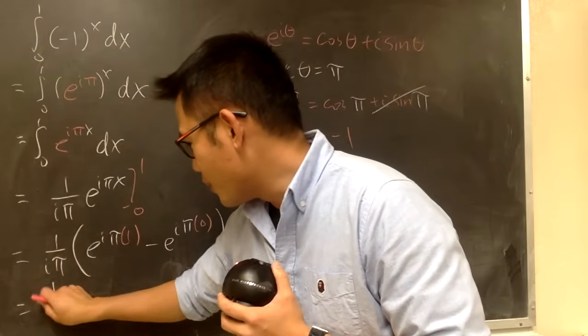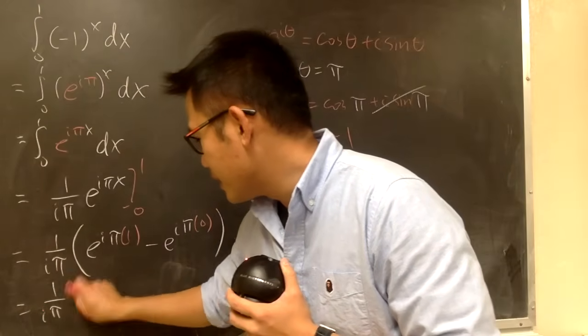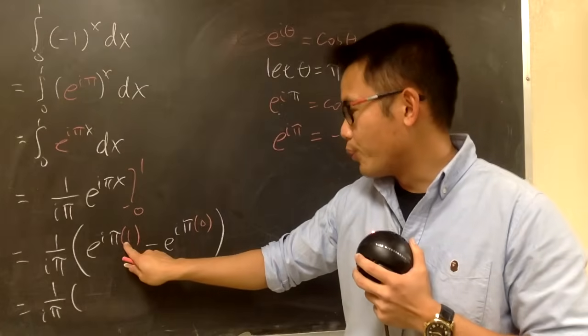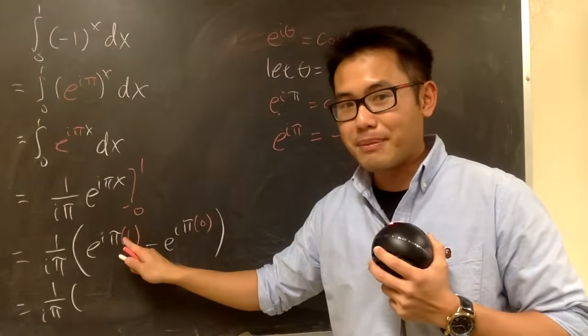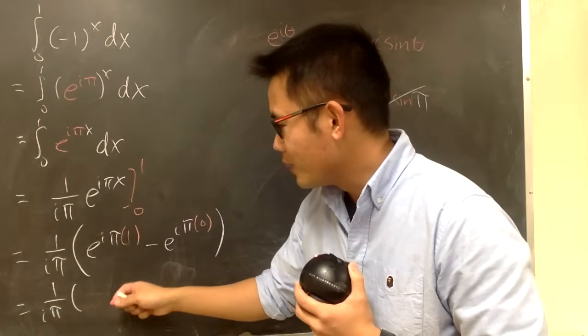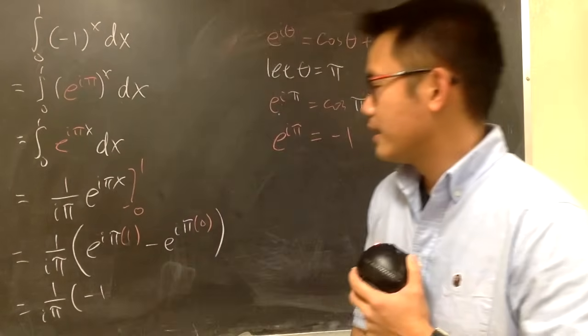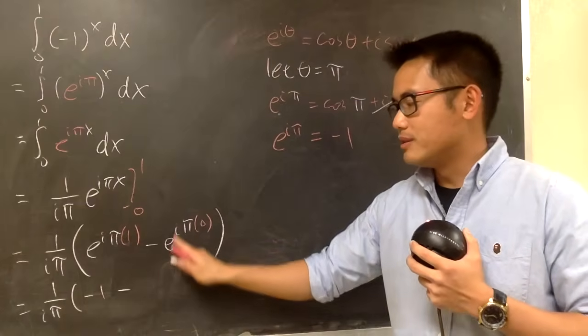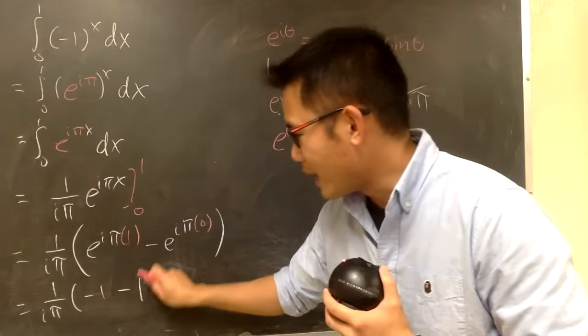In the end, we see that this is just 1 over i pi. This is just 1 times that, so it's still e to the i pi, which is, of course, still negative 1. So, right here, we still have the negative 1, minus e to the 0, which is just 1.